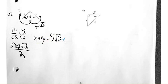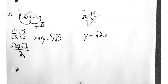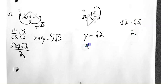Number four — another 45-45-90. This is my hypotenuse. The two legs have to be the same because they're equal to each other, so right off the bat I know that Y is radical two. Now, how do I go from the leg to the hypotenuse? Radical two times radical two is simply two. So the hypotenuse is two.